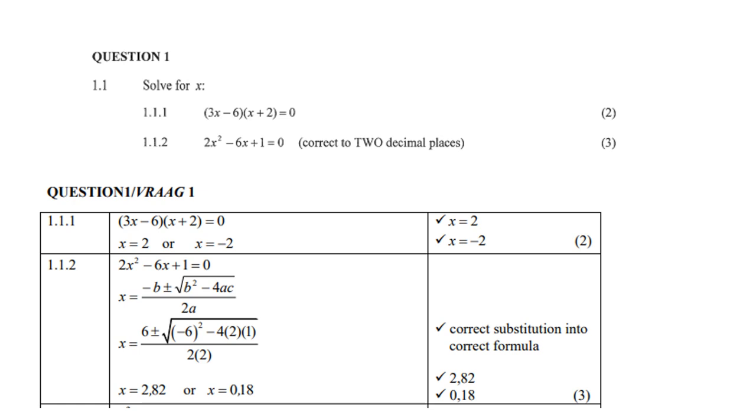Look at 1.1.2. The hint is if they tell you correct to two decimal places, that means the answers are irrational. That means you must use your quadratic formula which does appear on the formula sheet.